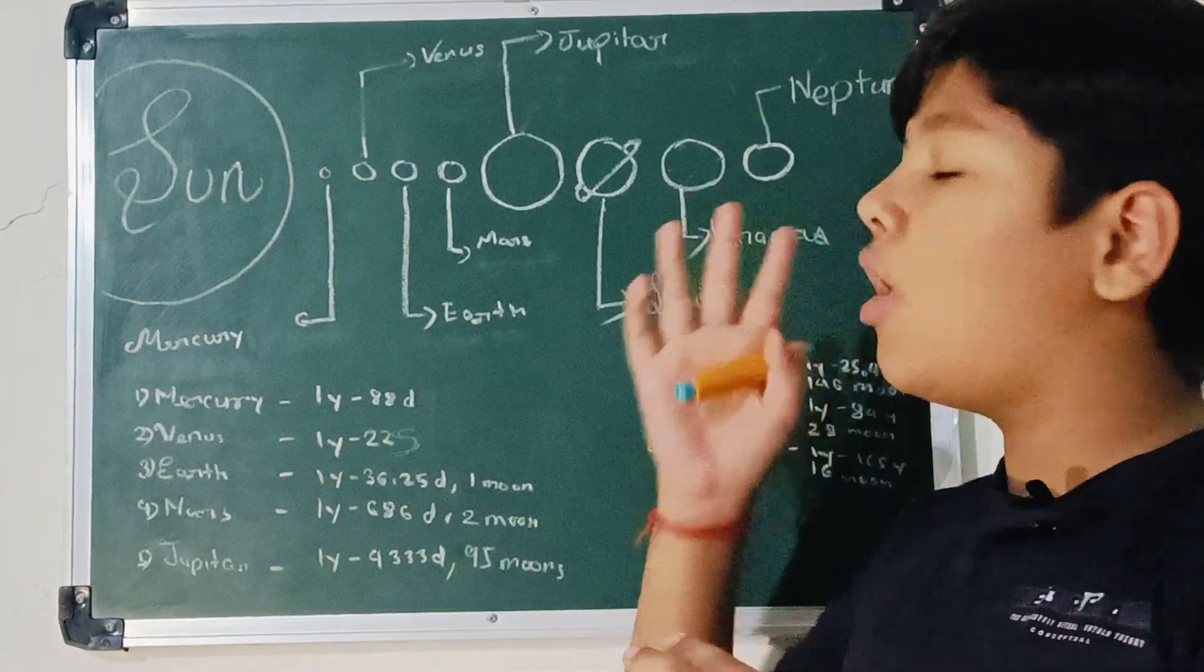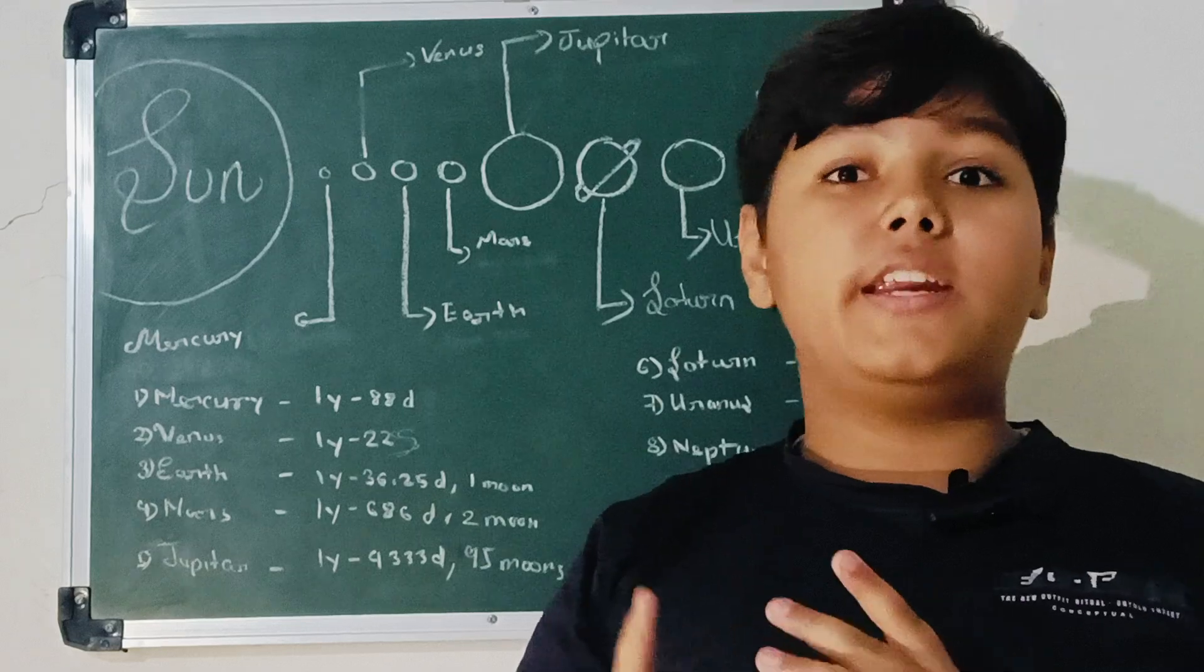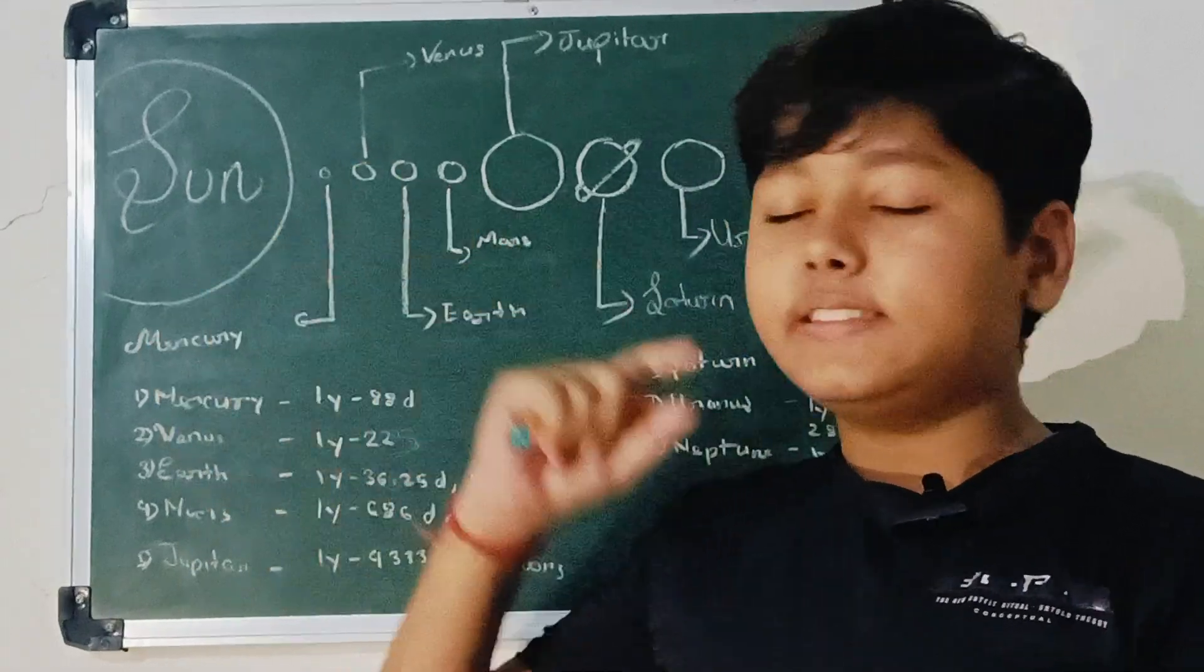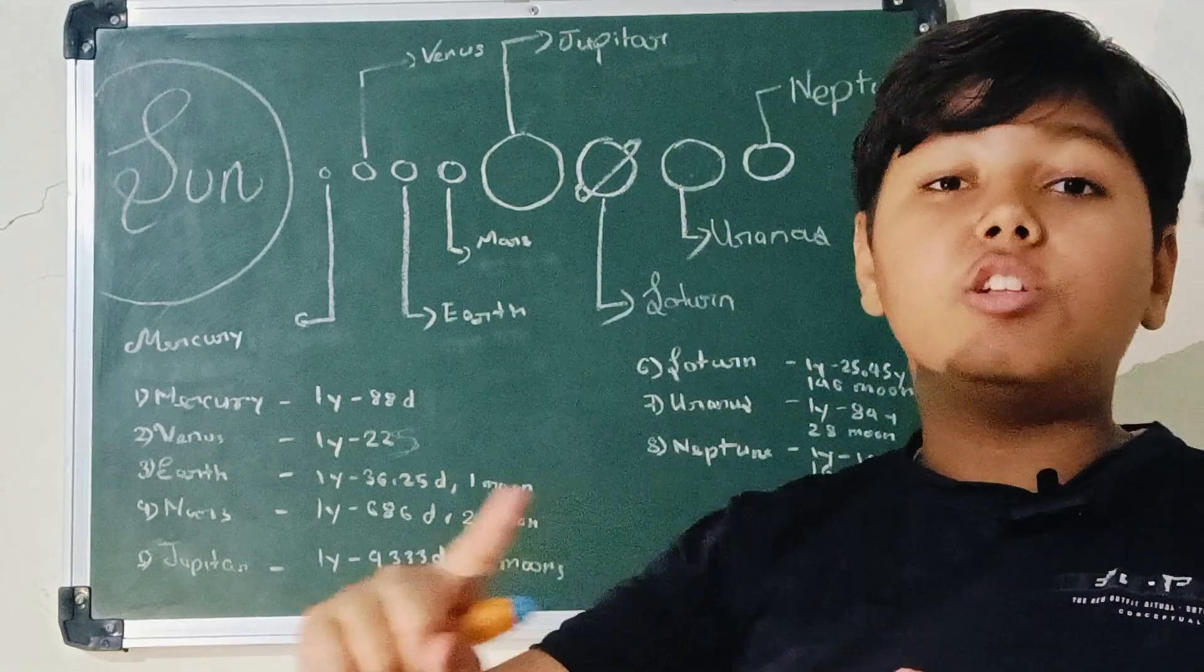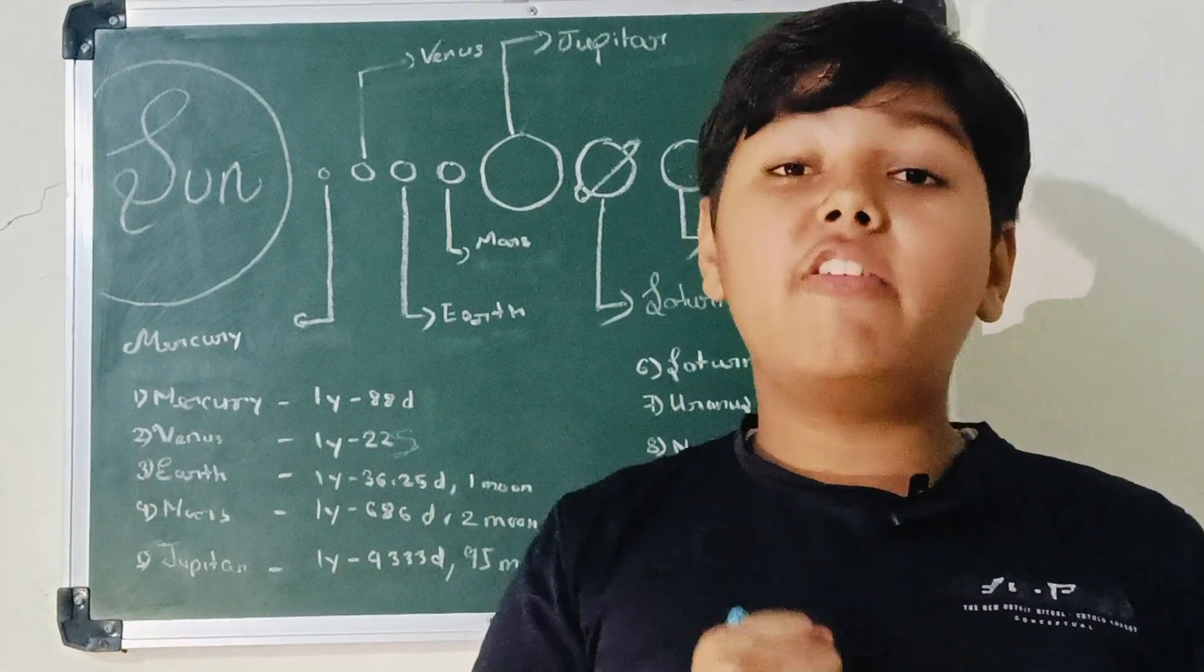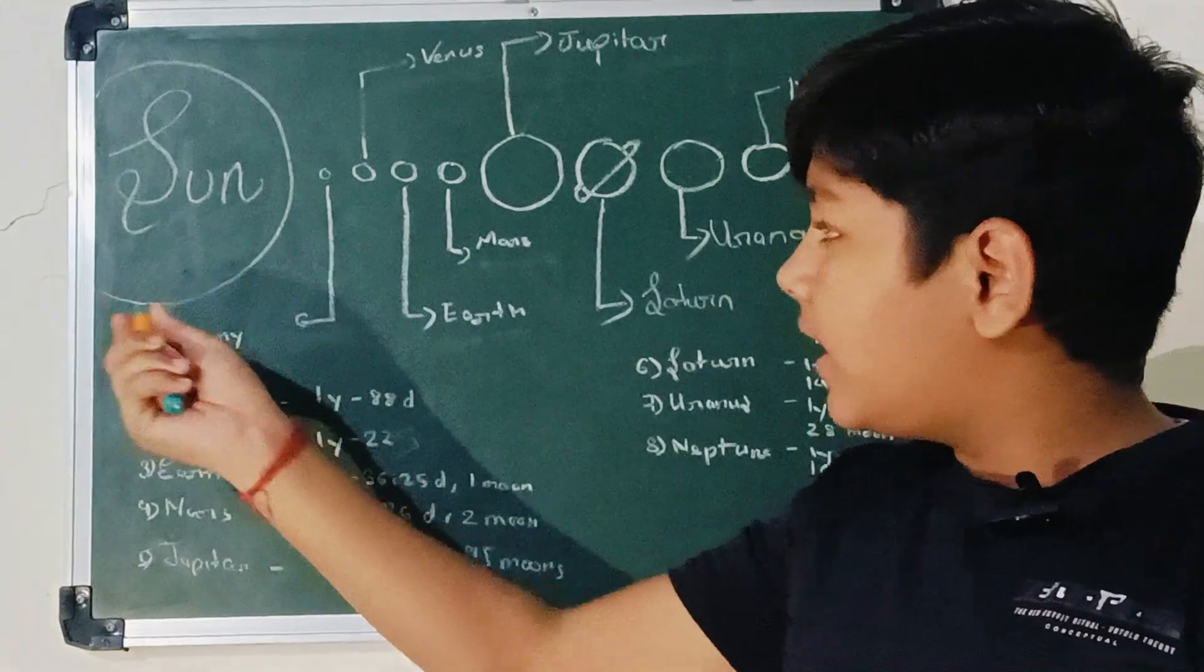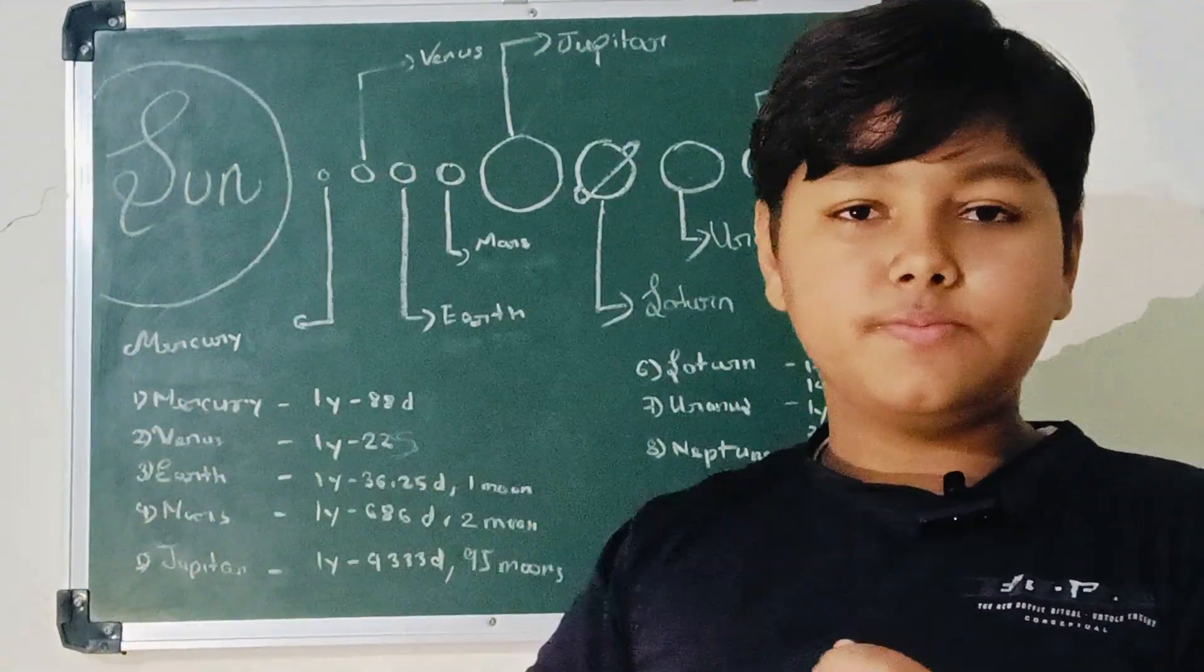All the planets, these all planets, revolve around the only star in our solar system, that's the sun. And our solar system also revolves around the Milky Way galaxy, our galaxy. So the sun revolves around the Milky Way and these all planets revolve around the sun.